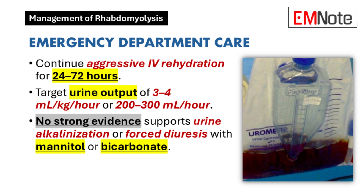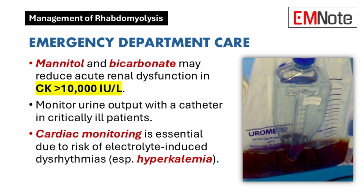Emergency department care. In the emergency department, aggressive intravenous rehydration should continue for 24 to 72 hours. One approach is to rapidly correct the fluid deficit with crystalloids, followed by an infusion rate of 4 mL per kg per hour, aiming for a urine output of 3 to 4 mL per kg per hour. Another method targets a urine output of 200 to 300 mL per hour. There is no strong evidence supporting the use of urine alkalinization with sodium bicarbonate or forced diuresis with mannitol or loop diuretics. However, some studies suggest that mannitol and bicarbonate may reduce the risk of acute renal dysfunction in patients with CK levels greater than 10,000 international units per liter. If bicarbonate is used, care must be taken to avoid metabolic alkalosis or hypocalcemia. Mannitol should be used cautiously, as it can cause osmotic diuresis in hypovolemic patients.